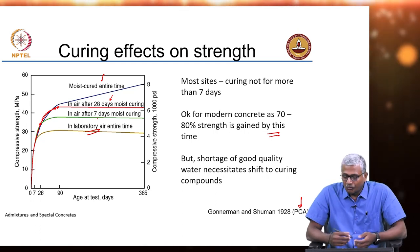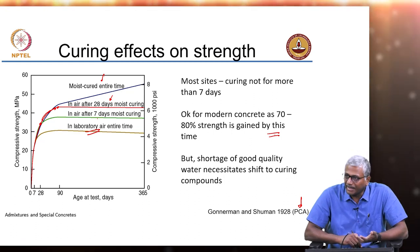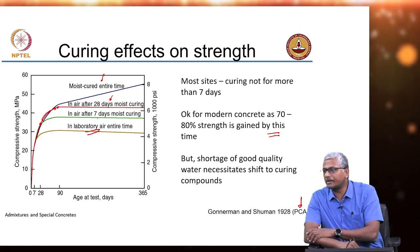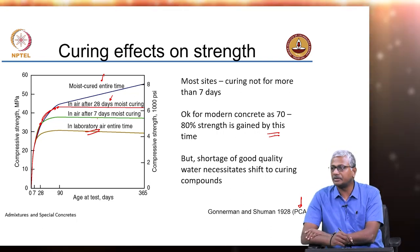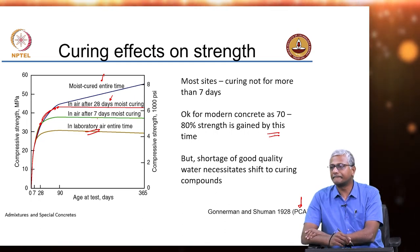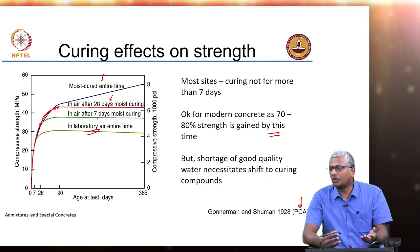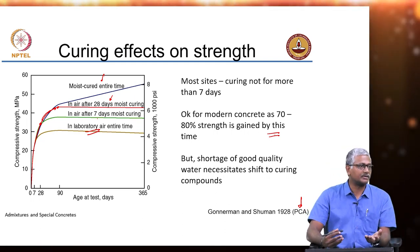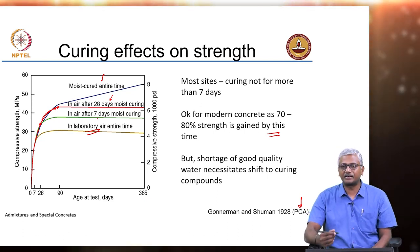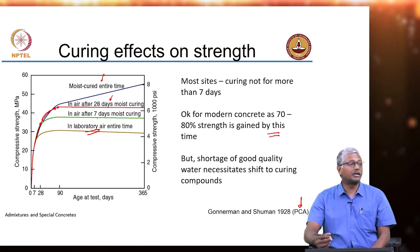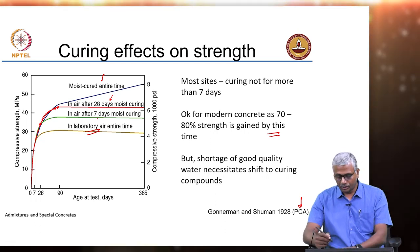These days water is not easily available, because of lack of good quality water. What is the requirement for curing water in terms of composition or purity? There is no special requirement — it is the same as mixing water, which is potable water — water that can be drunk. Potable means water that can be kept in a pot for drinking. That good quality water is not easily available on sites these days, so we have to increasingly shift towards curing compounds.